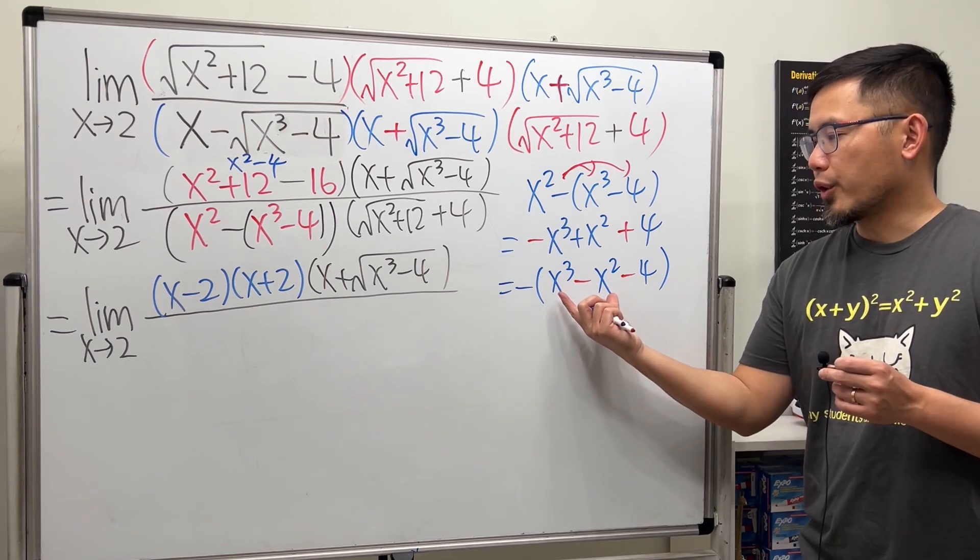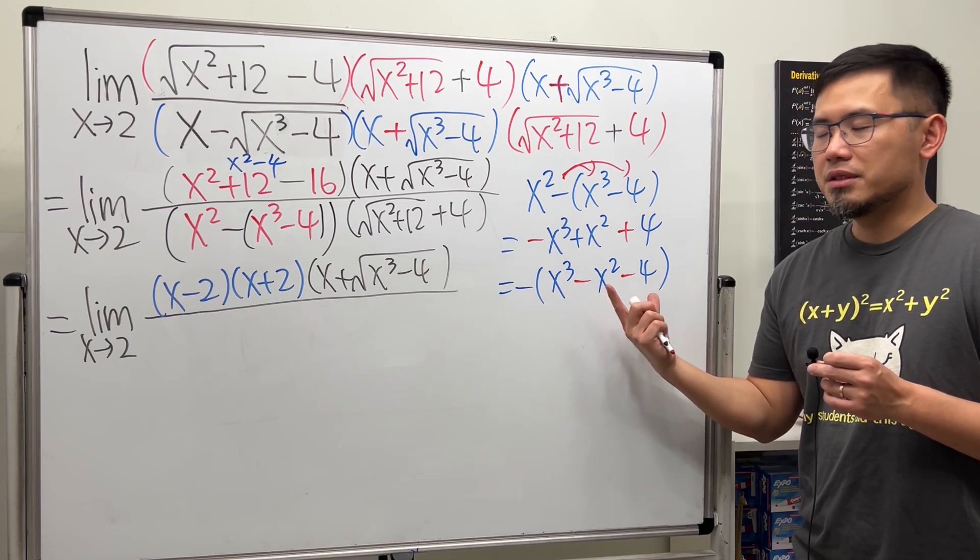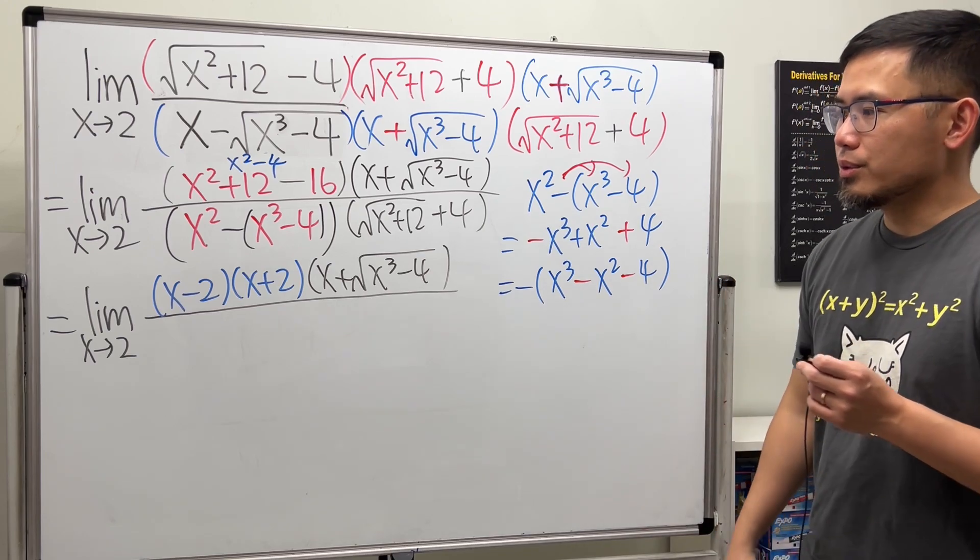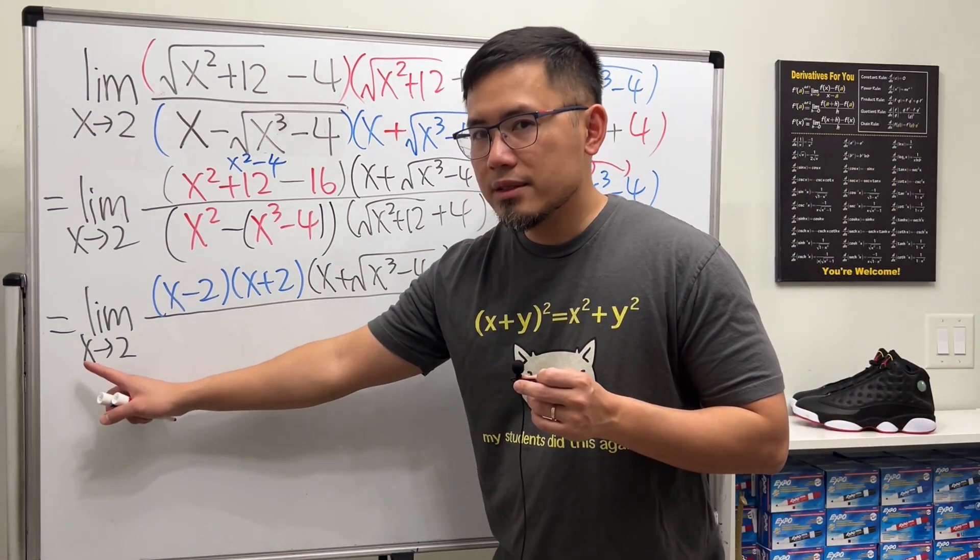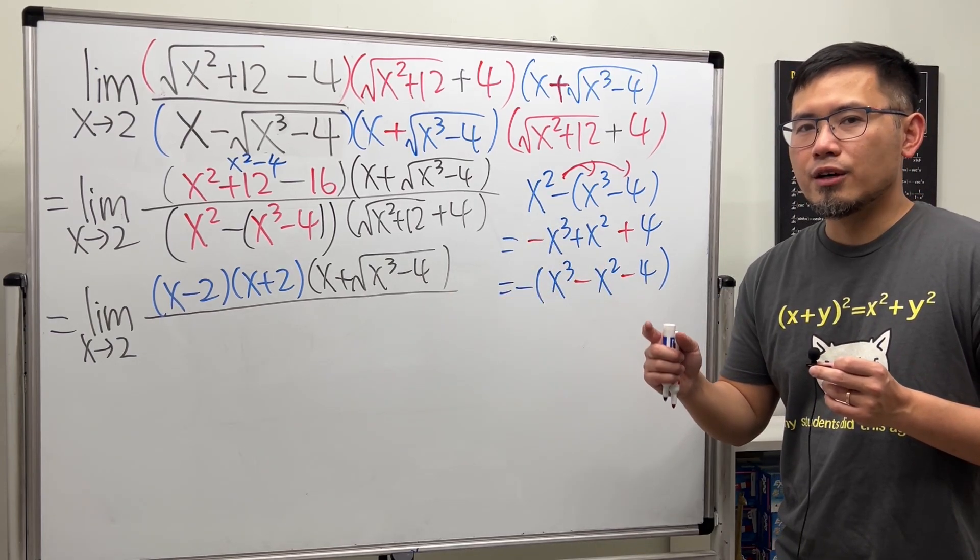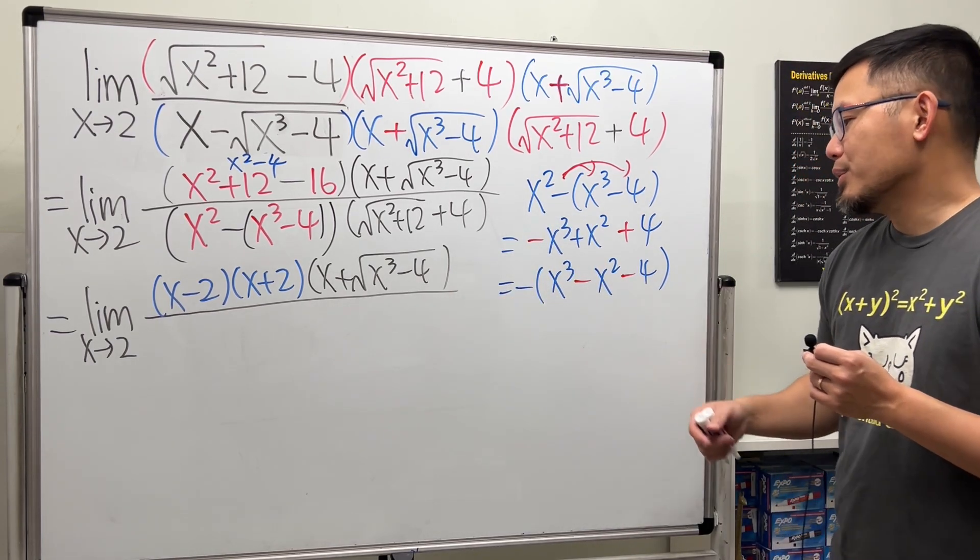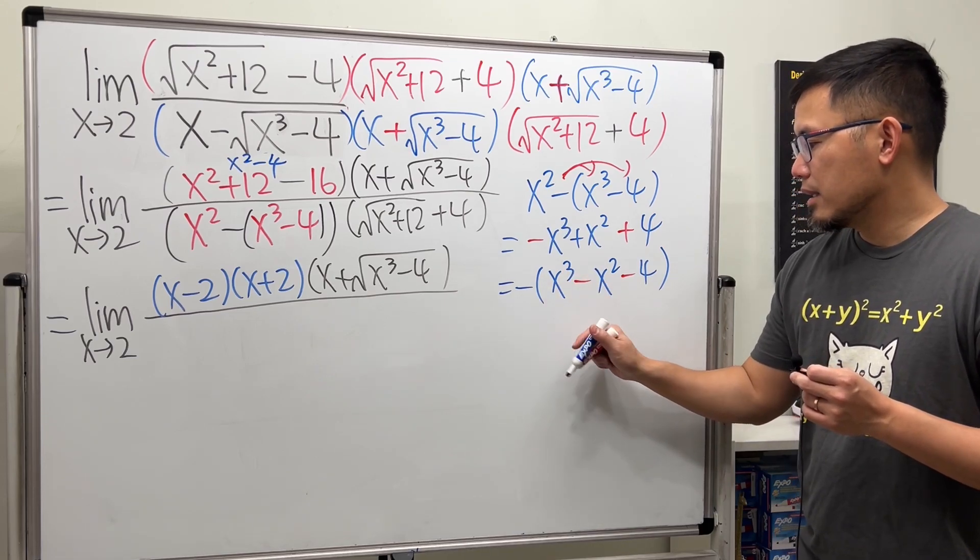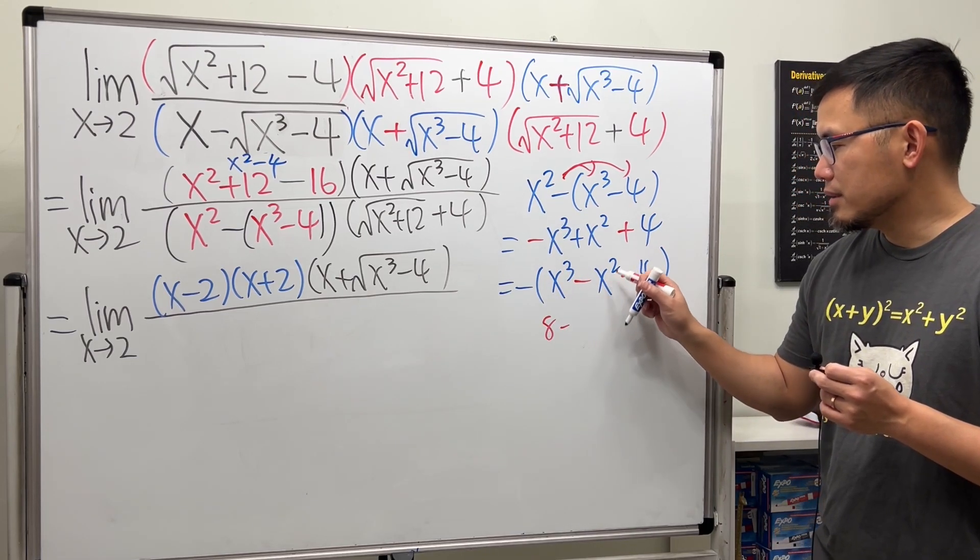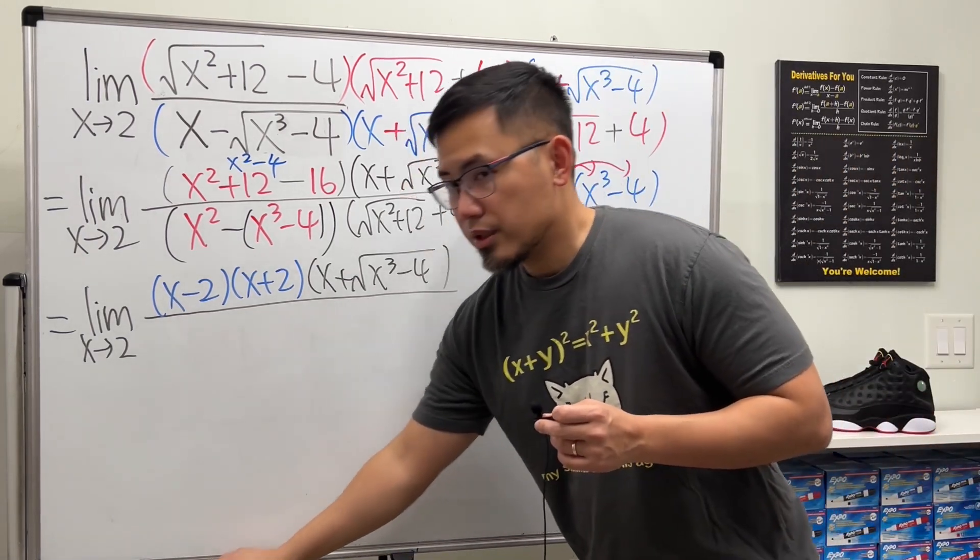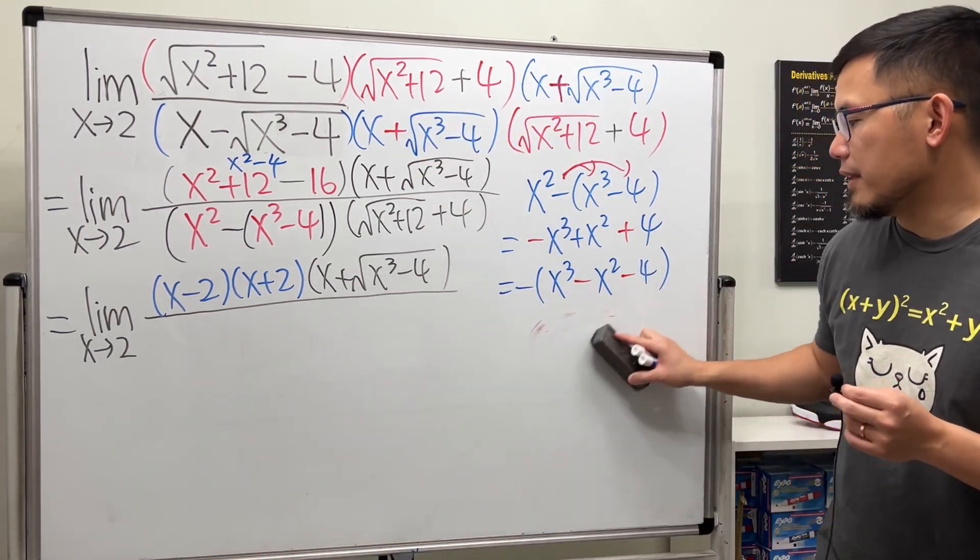So how do we factor such a cubic expression here? This is a trinomial but it's cubic. How do we do it? Notice, earlier I told you, when x is approaching 2, if we get 0 over 0, we must have a factor of x minus 2. And the truth is, if you put 2 into here, 2 to the third power is 8, minus 2 to the second power is 4, and then minus 4. This right here does give us 0. So x minus 2 is indeed the factor.